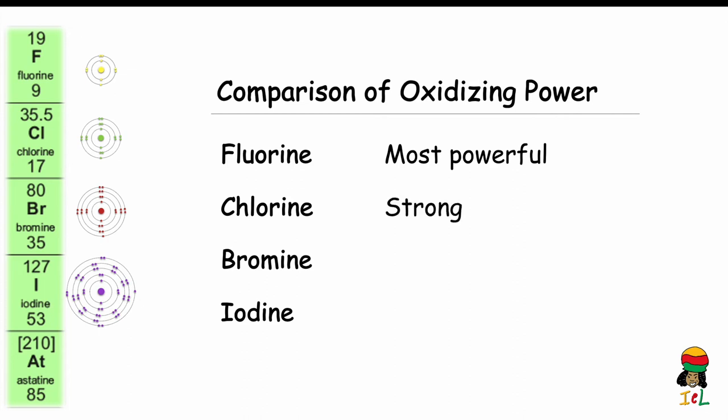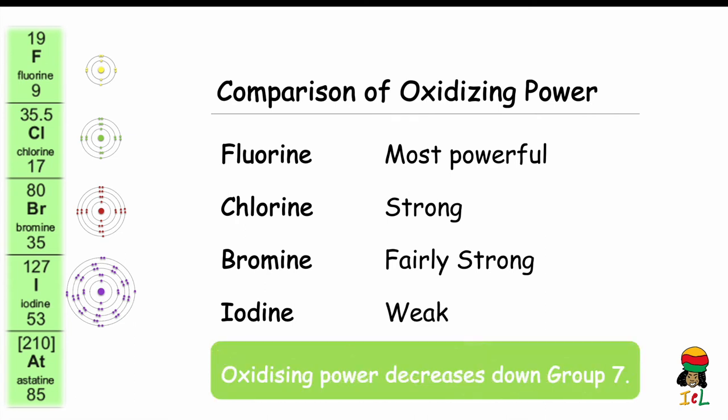Chlorine is a strong oxidizing agent. Bromine is fairly strong and iodine is weak. Therefore, oxidizing power decreases down Group 7.